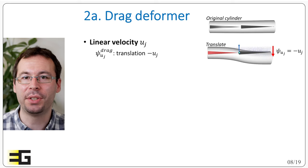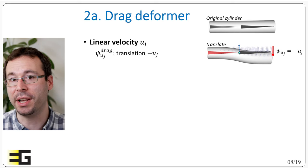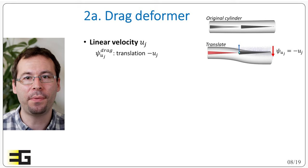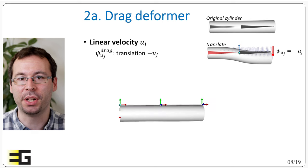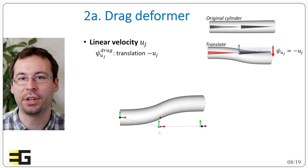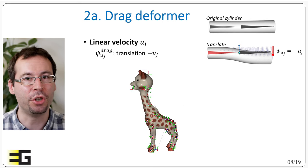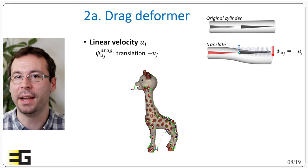So let us start with the drag effect. In the case where we have a linear velocity of the joint u_j, so a translation of the joint, we consider the deformer to be also a translation applied to the vertices. And this translation is very simply set to be the opposite to the direction of the linear velocity of the joint, so psi is equal to minus u_j.